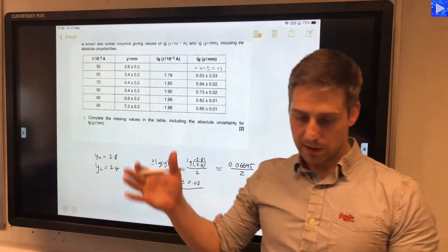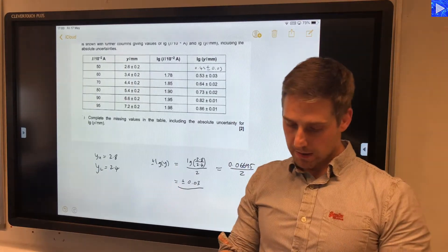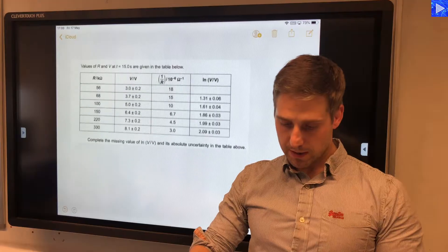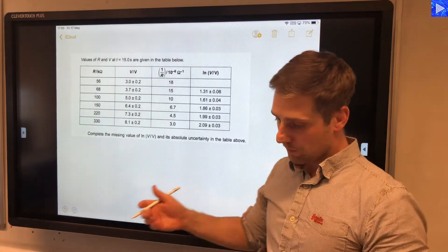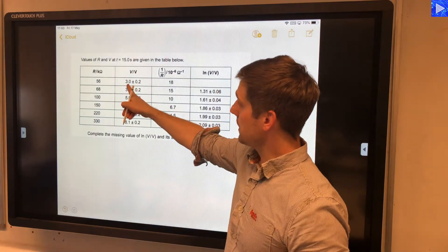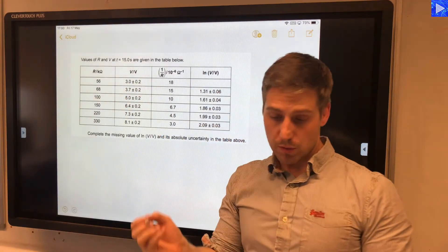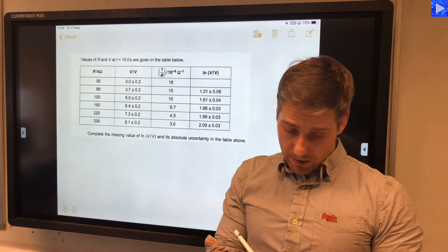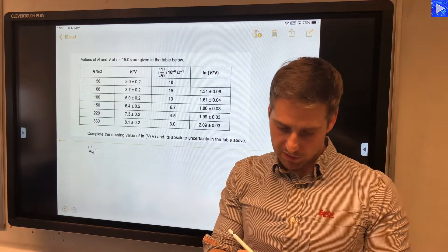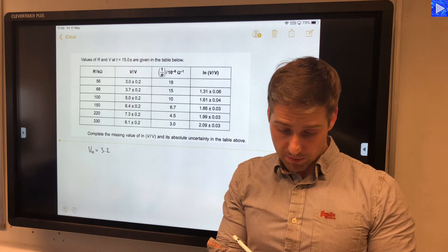Okay, so that's using log base 10. Same thing will work for natural logs as well. So if I scroll down here, we have some new set of data. Now we've got V is 3 plus or minus 0.2. So our upper value—you don't have to write down everything, I'm just doing it for completeness—3.2.